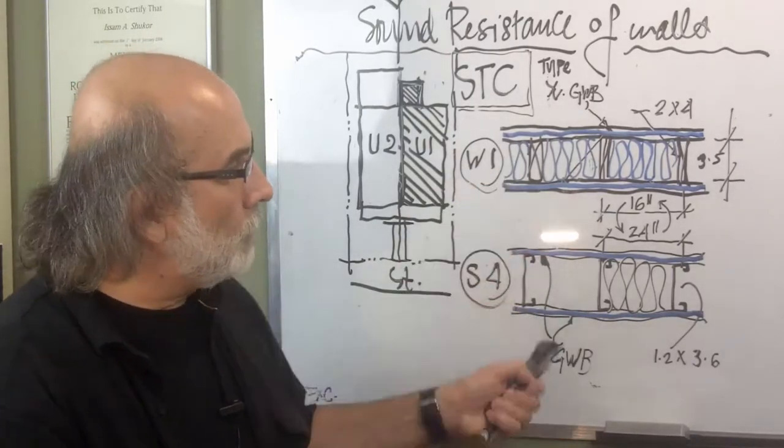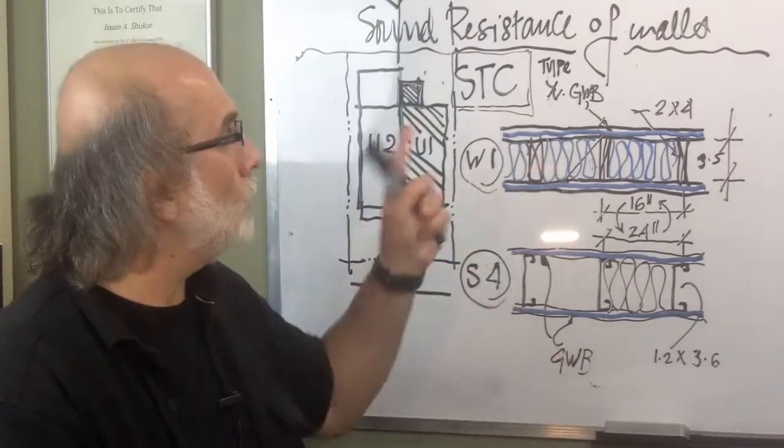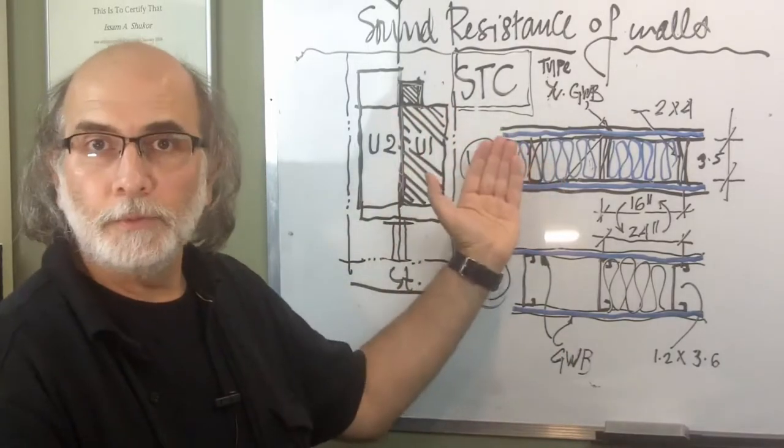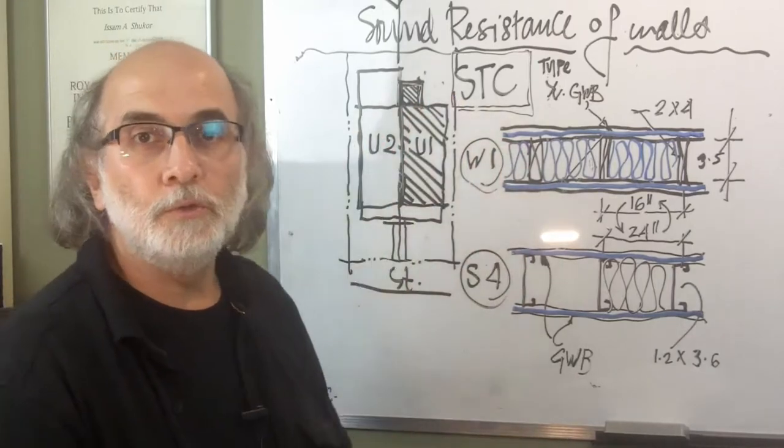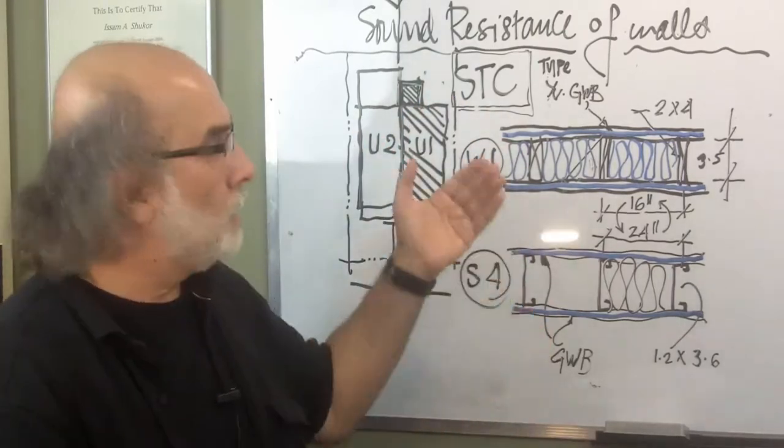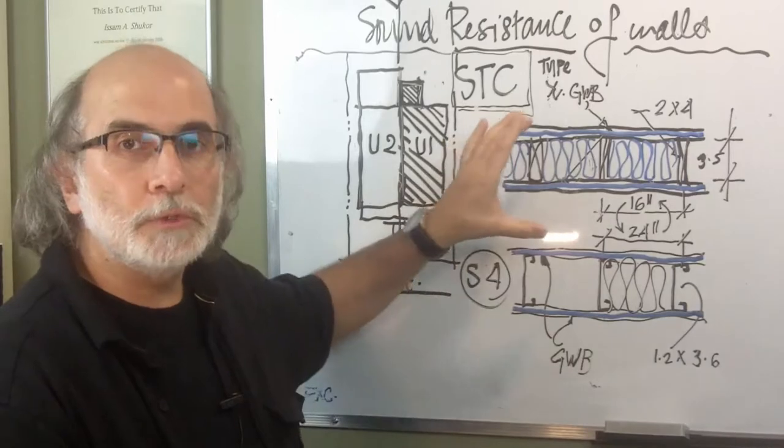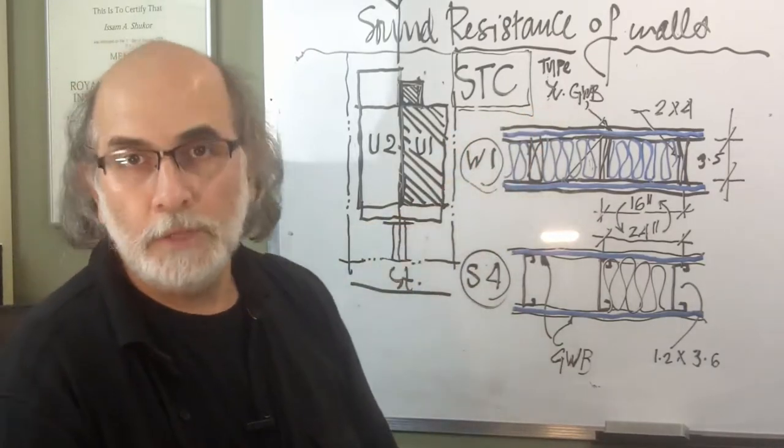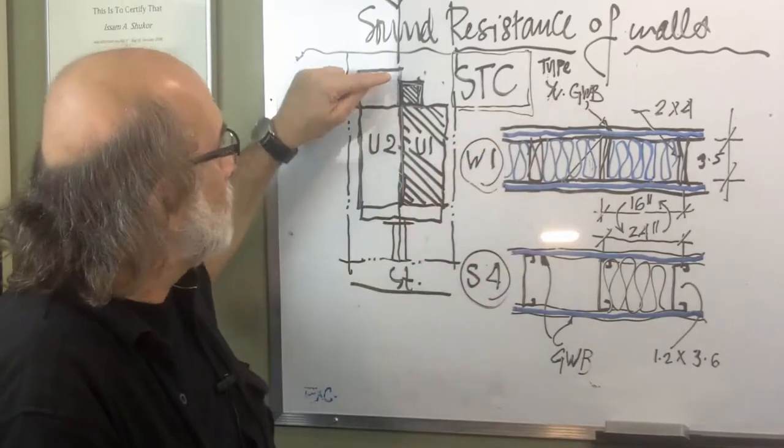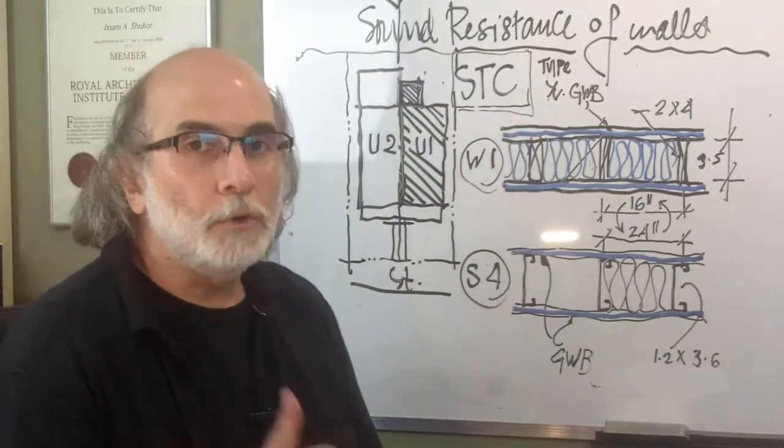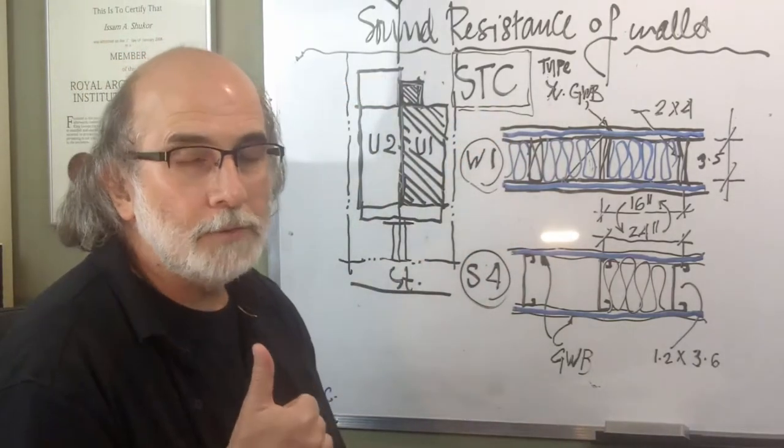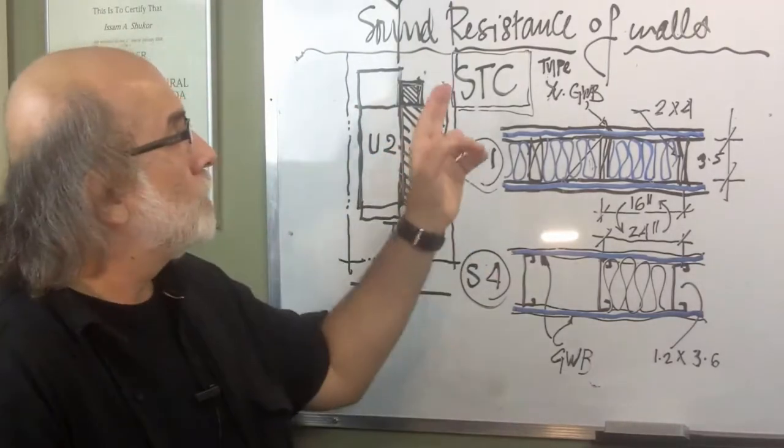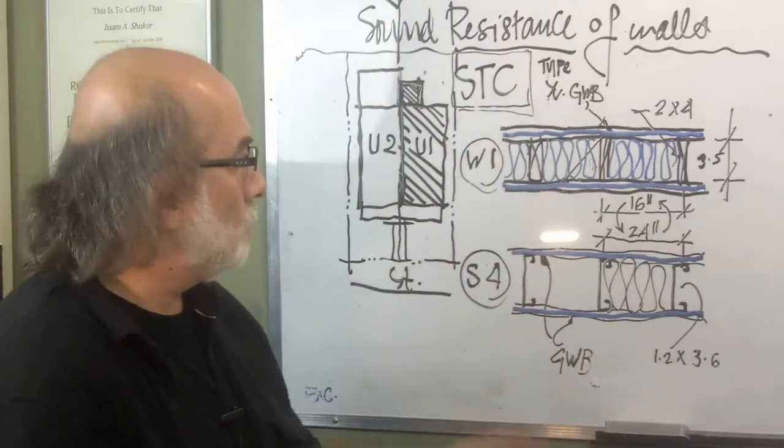Now, what we need to do here in both cases in order to solve this problem is we have to bring this up from 36 STC into 50-plus STC in order for this to be approved by the examiner. Because in this case, you'd not only look at the fire-resistant rating between these two units, but also you have to look at the sound transmission class between these two units.